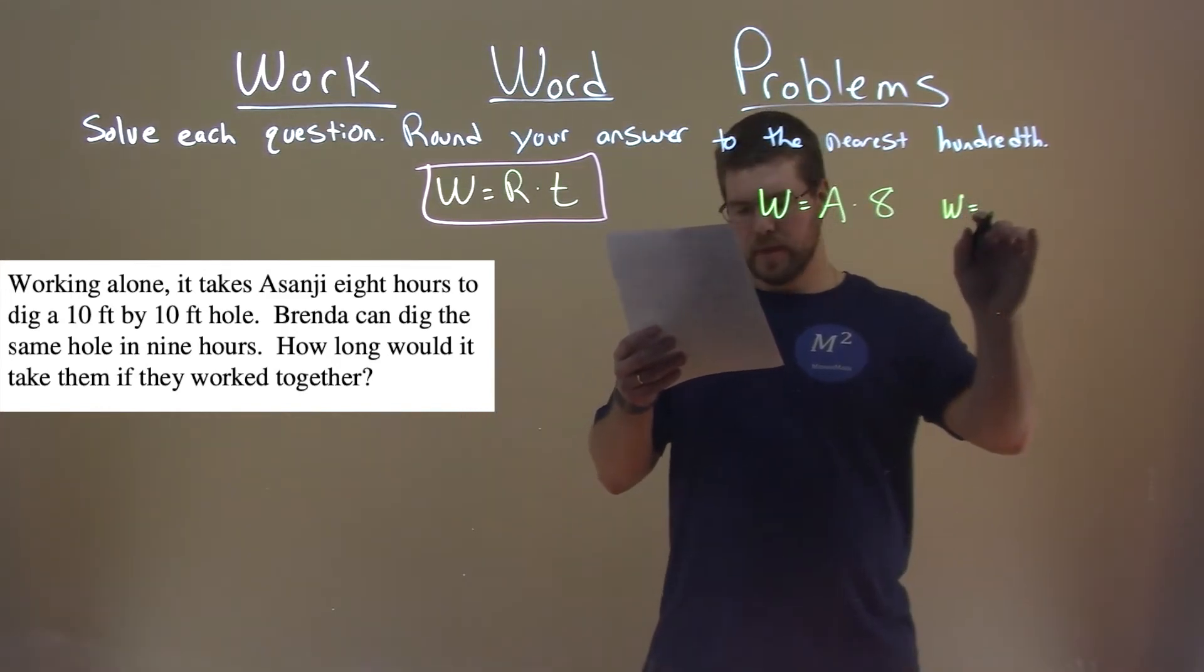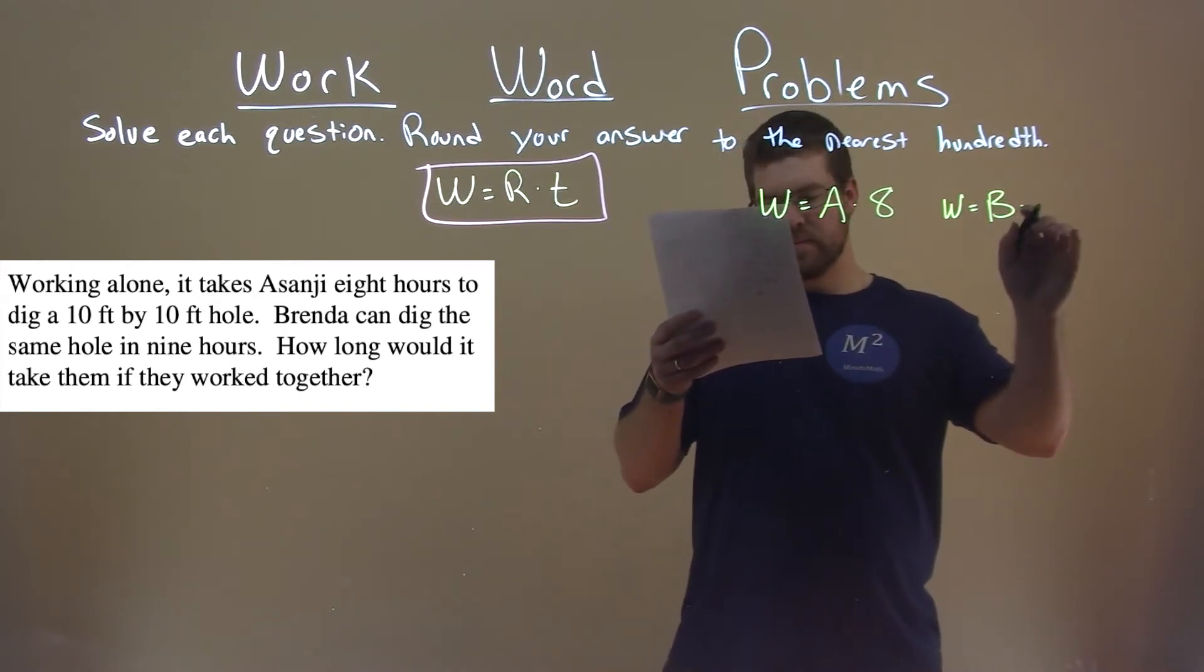That same hole, W, is equal to Brenda's work rate, B, times nine hours.